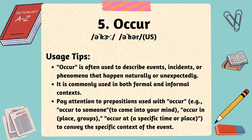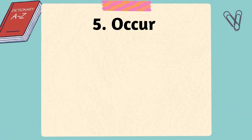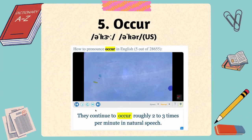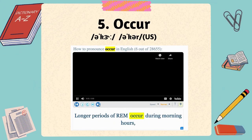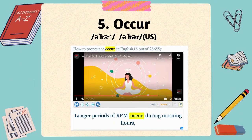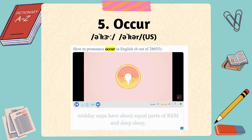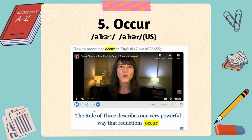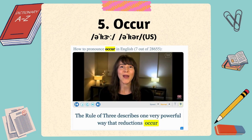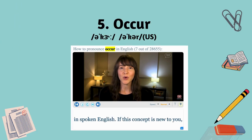Let's come to video samples for occur on Youglish. Longer periods of REM occur during morning hours, so morning naps are dominated by REM. The rule of three describes one very powerful way that reductions occur in spoken English.